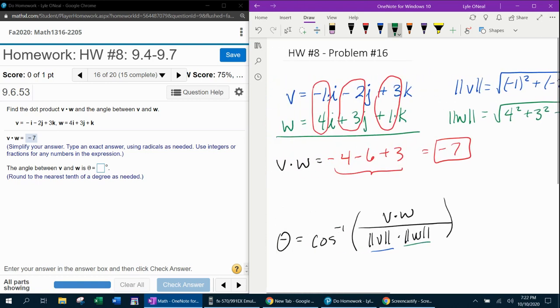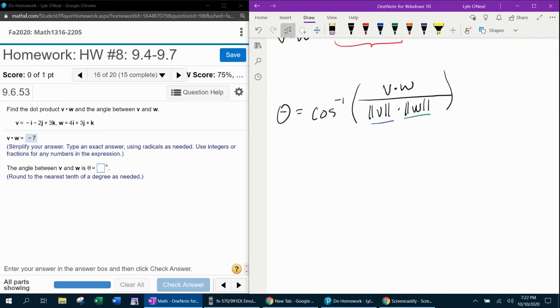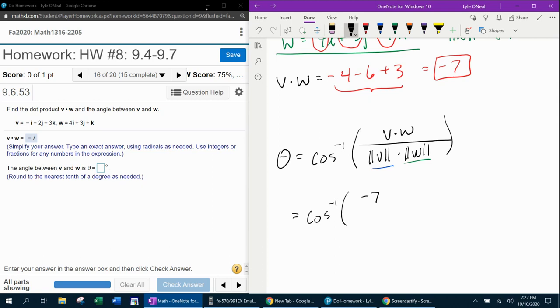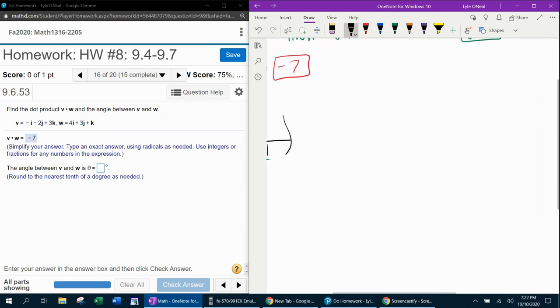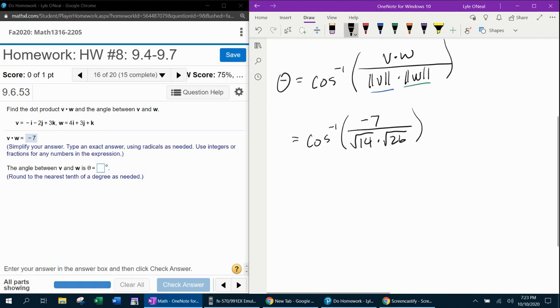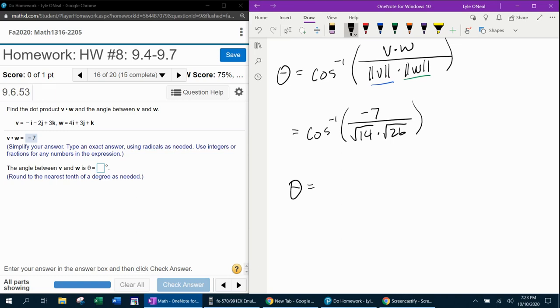And now I can plug and play into the formula to find the angle between the two vectors. All right. So that's going to be the inverse cosine of the dot product, which was negative 7, divided by the magnitudes, which were square root of 14 and square root of 26. And those need to be multiplied. And again, at this point, I've got something that I could input into my calculator all at one time and get that angle.